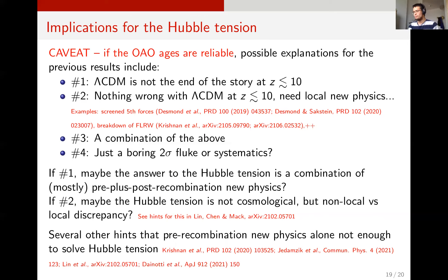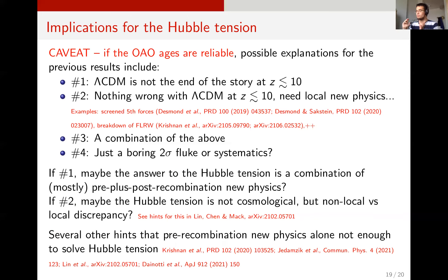There are also hints from doing the same with early time data. Overall, this is painting a common picture where the Hubble tension is not a simple problem. The usual mantra that the Hubble tension calls exclusively for early universe physics might be wrong or incomplete — the puzzle has more pieces than just early universe physics, in my opinion.